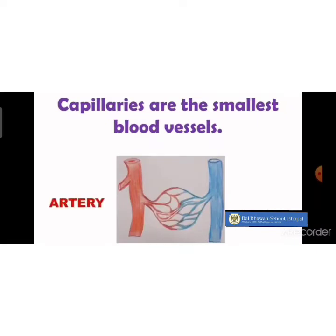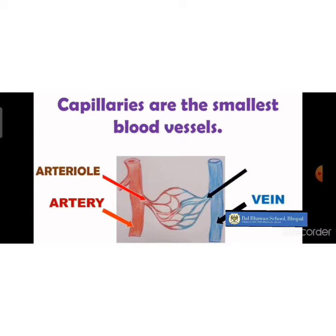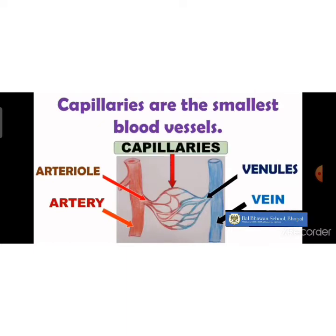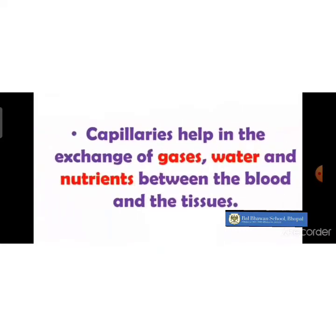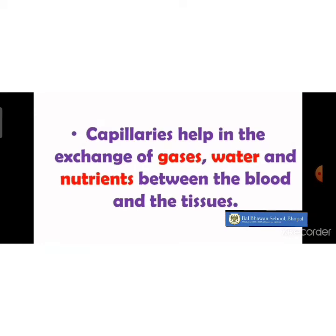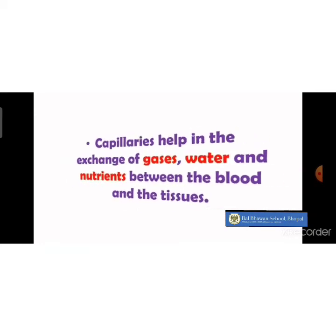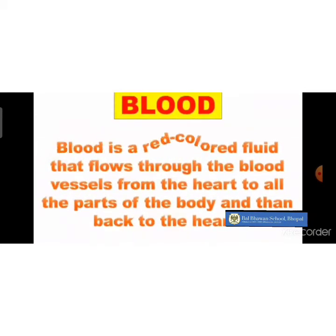Looking at this diagram, you can see the red color ones are the arteries, which branch into arterioles and then into capillaries. The blue color blood vessels are the veins, which branch into venules. In between you can see the capillaries, which are very fine blood vessels. Capillaries help in the exchange of gases, water, and nutrients between the blood and the tissue.